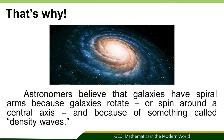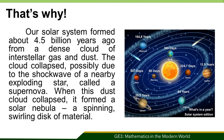Before we end our session, let me share some interesting things. Astronomers believe that galaxies have spiral arms because galaxies rotate or spin around a central axis and because of something called density waves. Also, our solar system formed about 4.5 billion years ago from a dense cloud of interstellar gas and dust. The cloud collapsed, possibly due to the shockwave of a nearby exploding star called a supernova. When this dust cloud collapsed, it formed a solar nebula — a spinning, swirling disk of material.